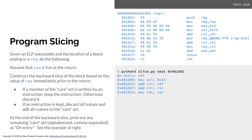You will construct the backward slice of the block based on the value of RAX immediately prior to the return. If a member of the care set is written by an instruction, you keep that instruction. Otherwise you discard it. If an instruction is kept, you discard the L-values first and then add all the R-values to the care set.